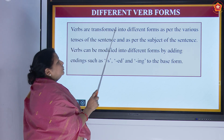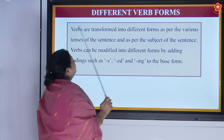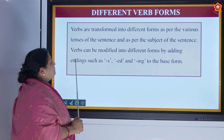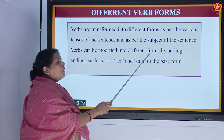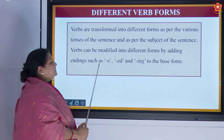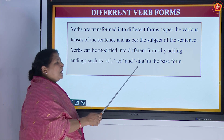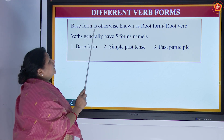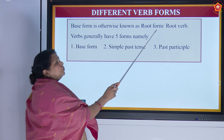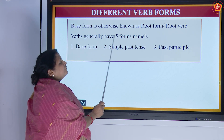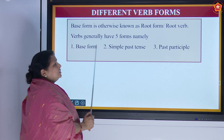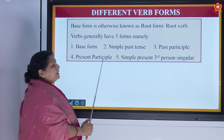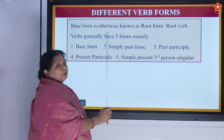Verbs are transformed into different forms as per the various tenses of the sentence and as per the subject of the sentence. Verbs can be modified into different forms by adding endings such as s, ed, and ing to the base form. Base form is otherwise known as root form or root verb. Verbs generally have five forms: base form, simple past tense, past participle, present participle, and simple present third person singular.